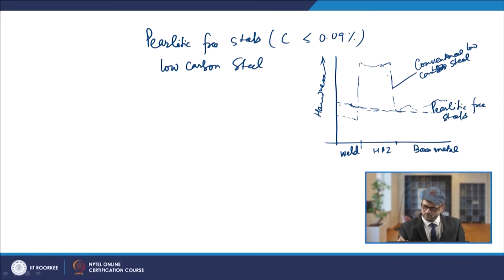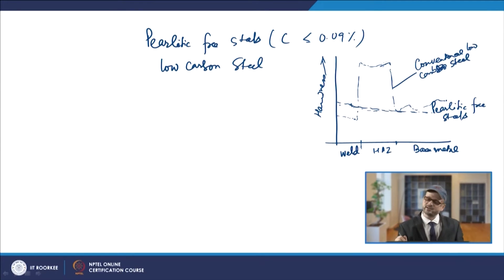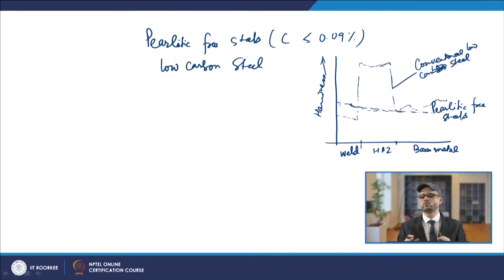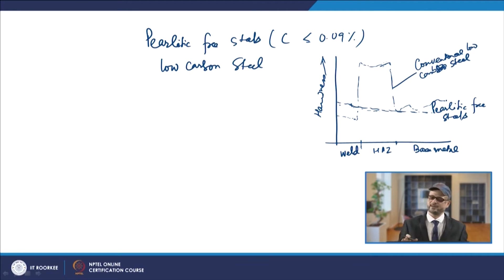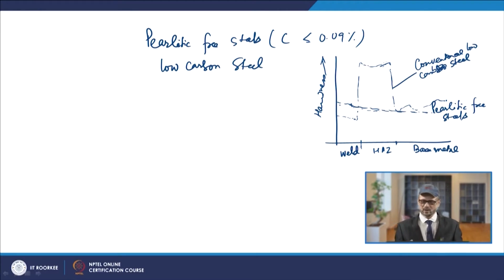Most alloy steels will be showing this martensitic or martensitic-bainitic structure over a wide interval of cooling, from approximately 800 to 500 degrees centigrade.